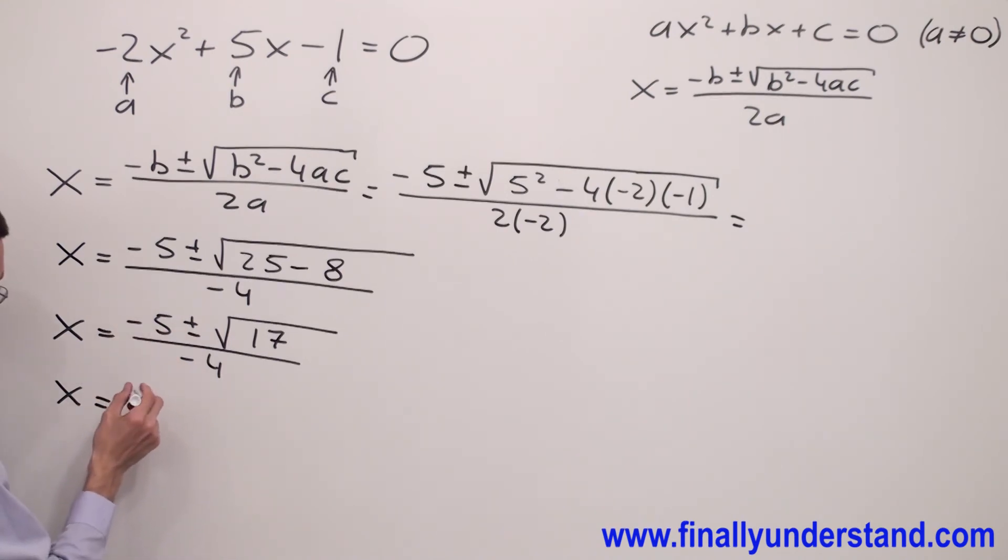So if I'm going to factorize the negative sign from the numerator, I have negative sign and I have 5. So positive is going to change to negative and negative will change to positive, square root of 17 over negative 4.